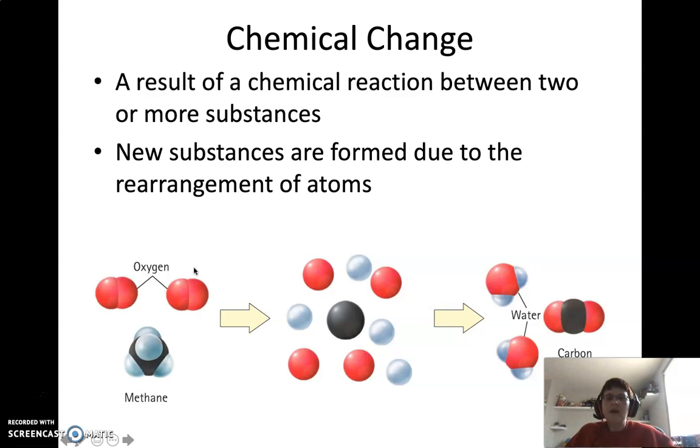And so you can see we've got our oxygen atoms. They get split apart, as well as the carbon and hydrogen atoms with the methane. Everybody gets split apart during that reaction. And they rearrange themselves into water molecules and carbon dioxide. So we get new substances here at the end. And if you notice, same number of everybody. So we still have four oxygen, a carbon, and four hydrogens, but in a new arrangement to make those new substances.